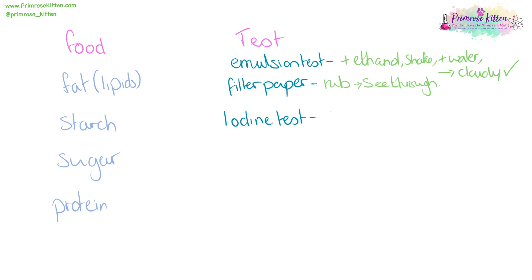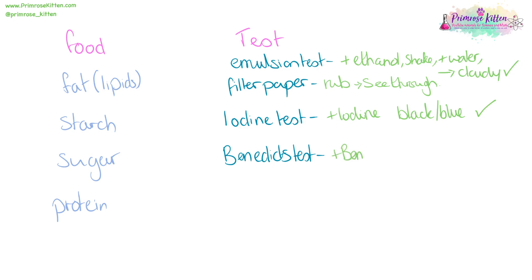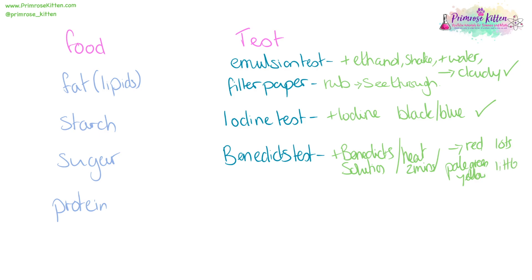To test starch, you add iodine, and if starch is present it is going to go a dark black-blue color — that means it's a positive result. To test for reducing sugars, we can add Benedict's solution, heat it for two minutes in a water bath, and if it goes red there's lots of sugar, or a pale green-yellow if there's a little bit of sugar.